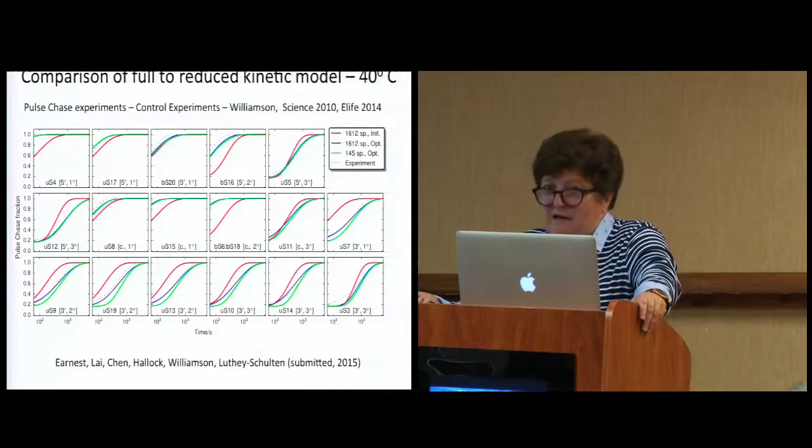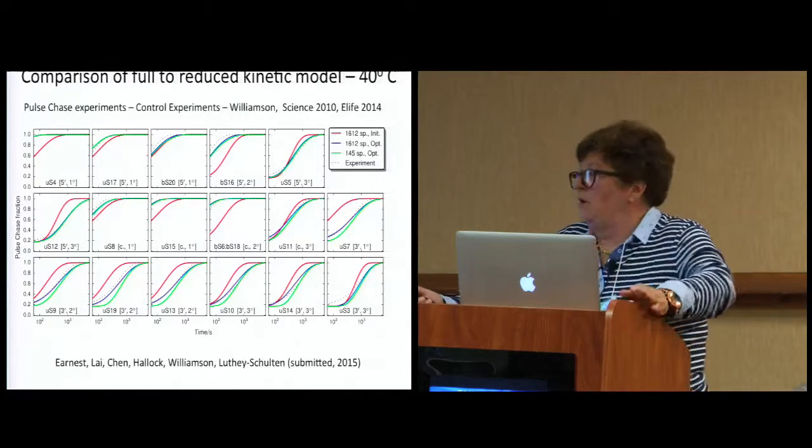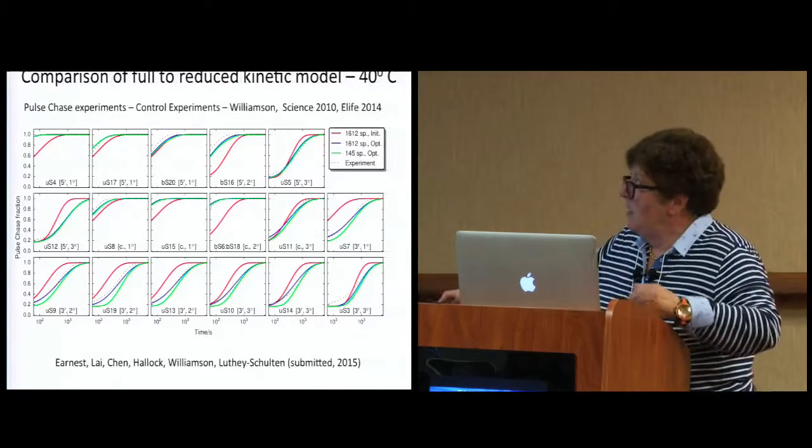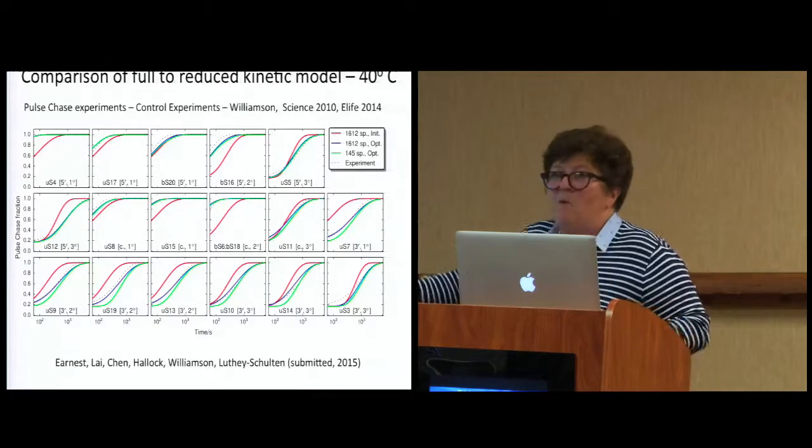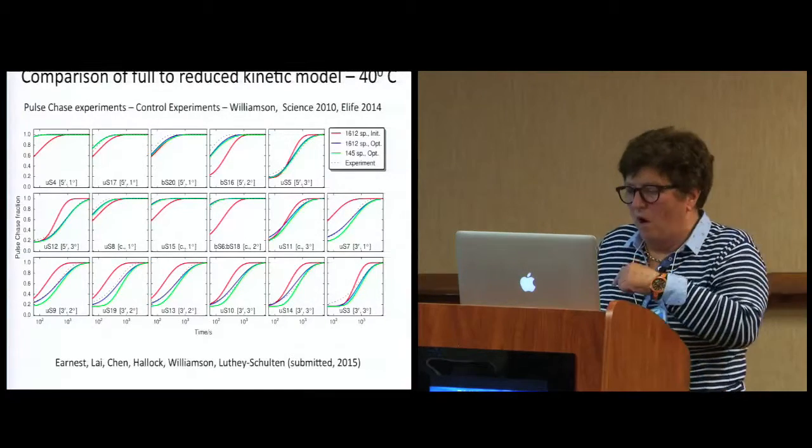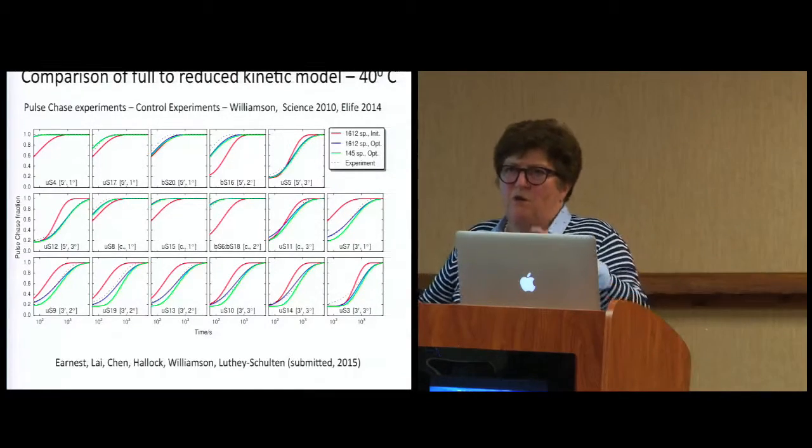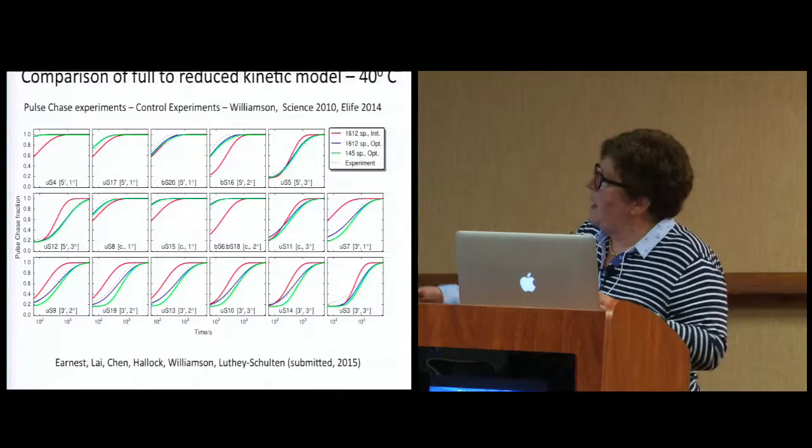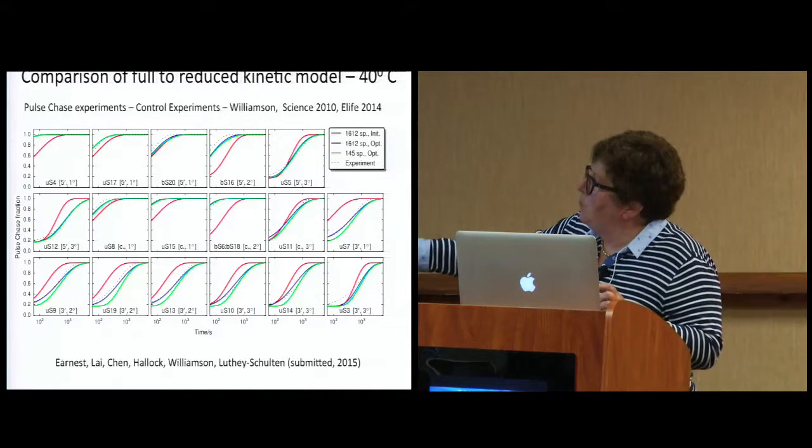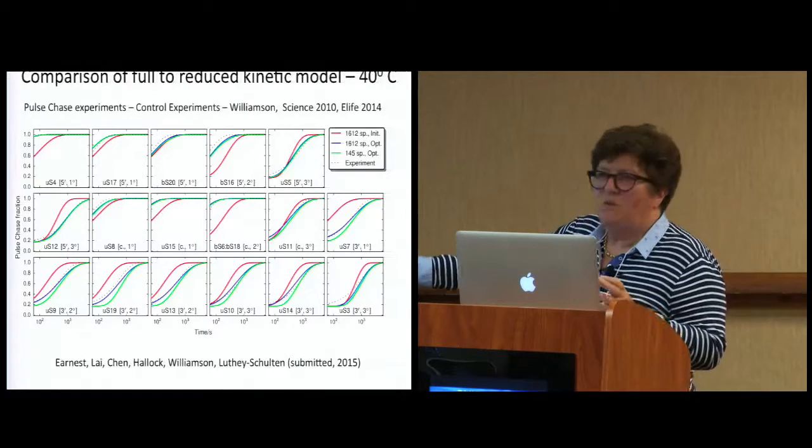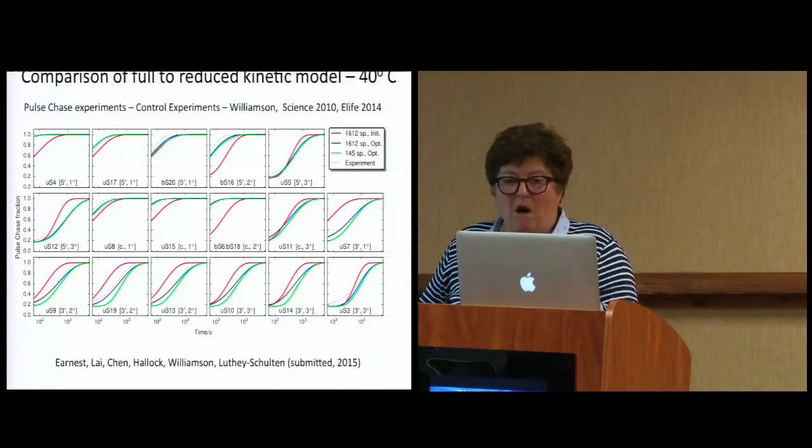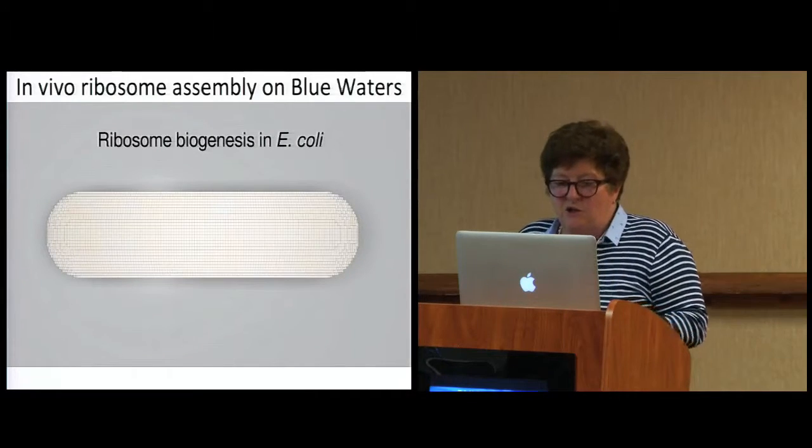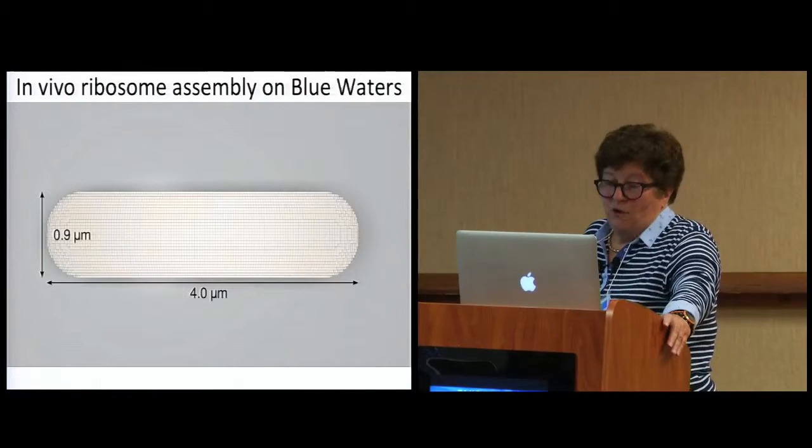So first, how do we get rates for that? We worked together with one of the leading ribosome people out in Scripps. His name is Jamie Williamson. He did a series of pulse chase experiments where you throw in naked RNA or naked RNA with some other proteins. The bottom line is you're seeing 1600 here, but even that was too many for us for our cell simulations. We wanted to reduce it as much as possible. So those intermediates that had low population we took out. So we got it to 145. And what you need to compare is the green with the dotted line, which is the experiment. This was our model for assembly.